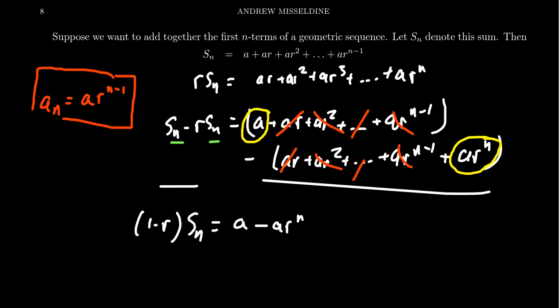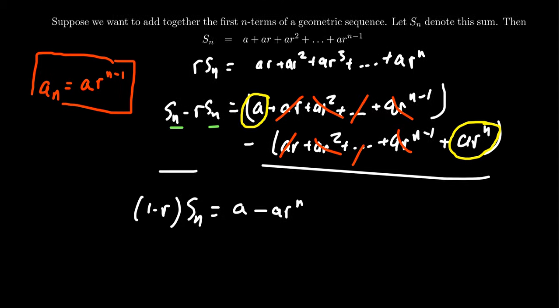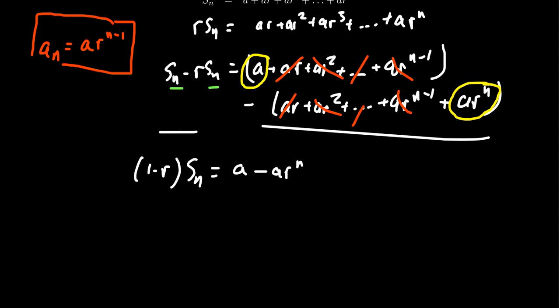In which case, then, to solve for S_n, what we can do is just divide both sides by 1 minus R. In which case, we then get that S_n will equal A minus AR to the n over 1 minus R. The numerator is divisible by A, so you can factor out the A. In which case, you get A times 1 minus R to the n over 1 minus R.